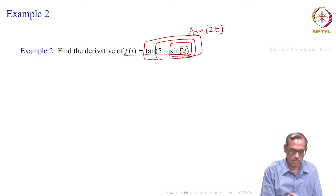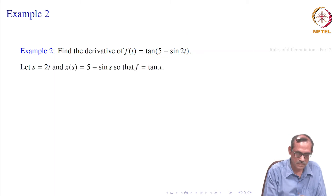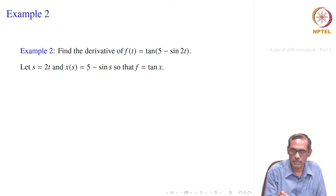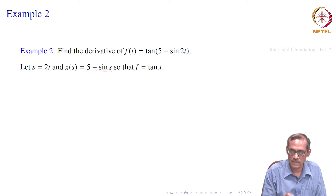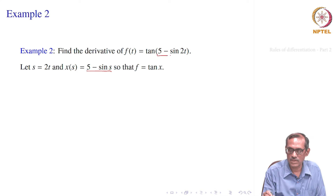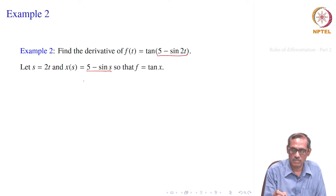We have to proceed slowly. So let us say s equals 2t, and x of s is 5 minus sin s, and f is tan of x. So f is tan of x — this is your x now.